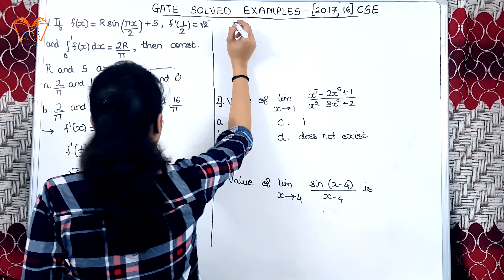The last example: find the value of limit x→4 of sin(x − 4) / (x − 4). If we substitute x = 4, the numerator becomes sin(0) = 0 and the denominator becomes 0. So we get 0/0 again, and we apply L'Hôpital's rule the same way as in the previous example.